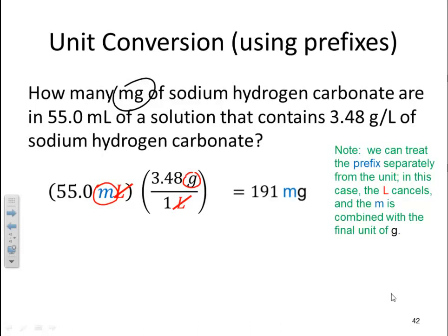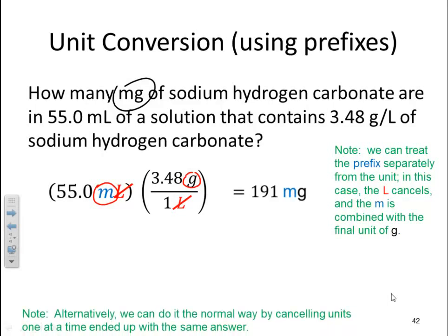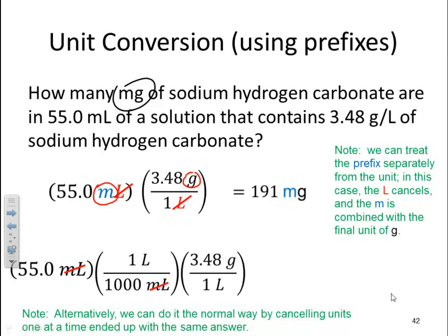Let me show you what I mean by that. Alternately, we could have done this the normal way by canceling units one at a time ending up with the same answer. Let's see how this differs. You start off with your 55 milliliters. Well, I know I got to cancel with liters. So the first thing I do is convert milliliters to liters. So I would do a thousand milliliters to one liter. Milliliters cancel. So now I'm in liters. 55 divided by a thousand will tell me how many liters I have right now. Now I convert that liters to mass. So I got my 3.48 grams for one liter. My liters cancel. So now I got my grams. 55 times 3.48 divided by a thousand would give me my grams.